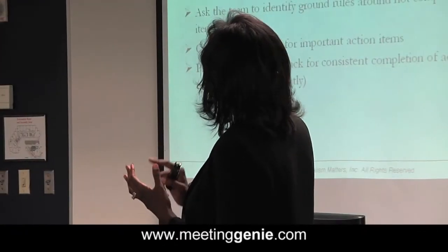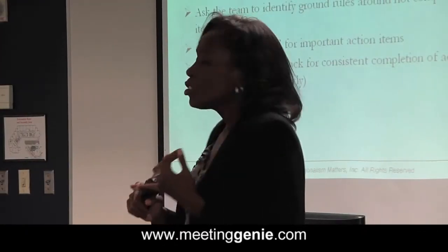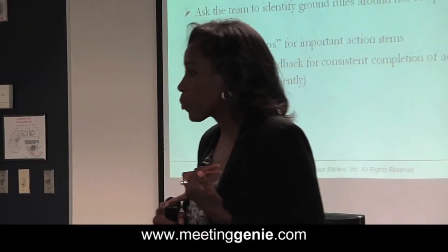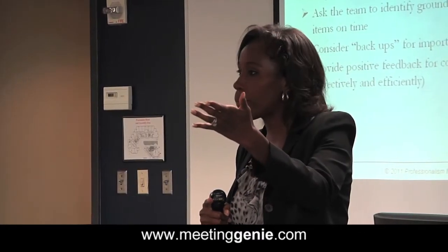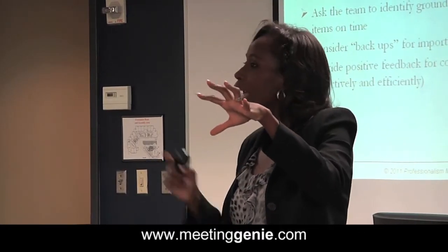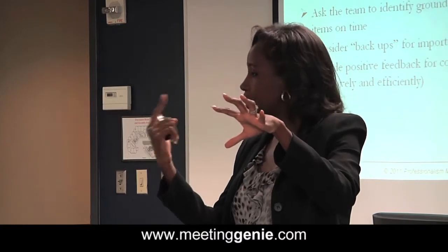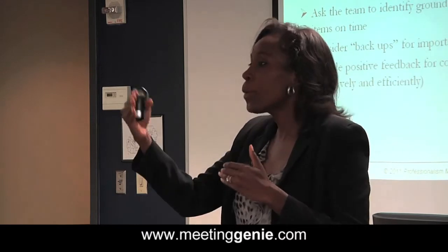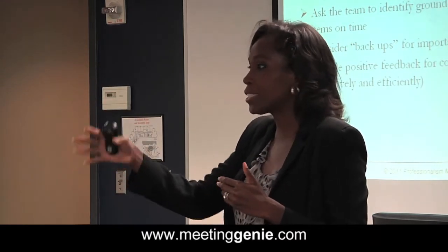The third one: ask the team to identify ground rules around not completing action items. That's exactly what we're talking about here — use this as a learning opportunity. So when Luke gets to number 32 and has to confess he didn't get a chance to get to that, you want to piggyback on that. You don't want to waste that opportunity.